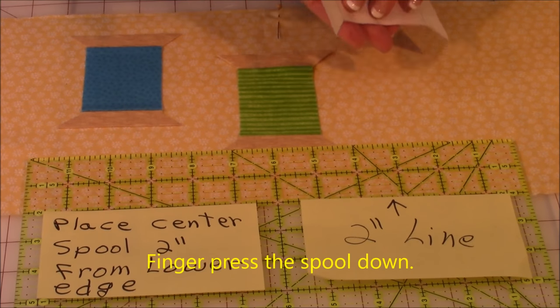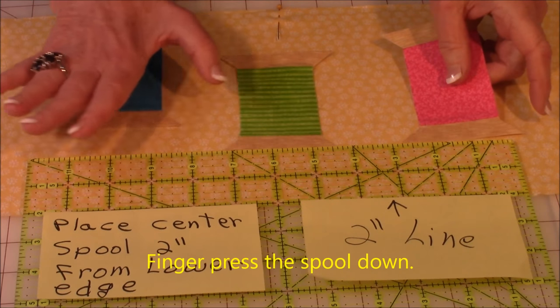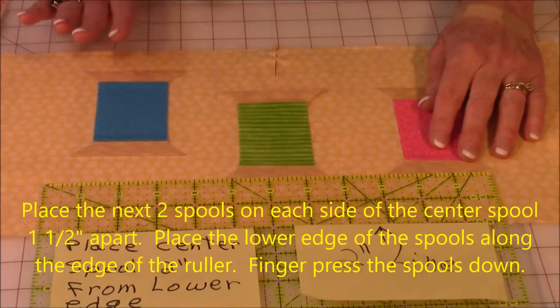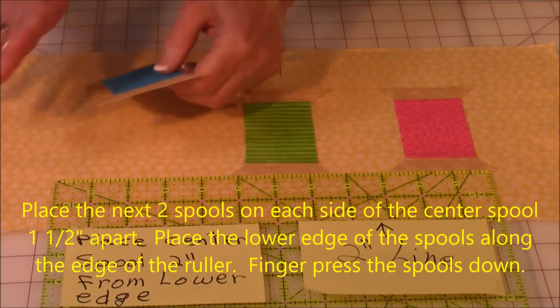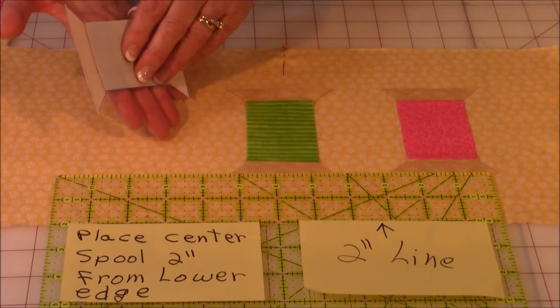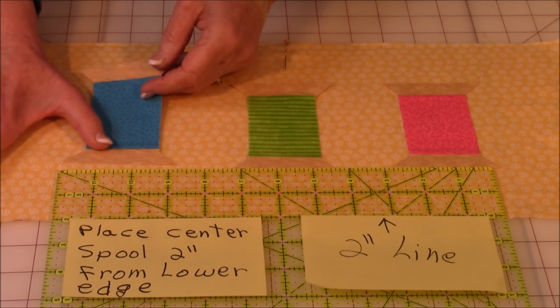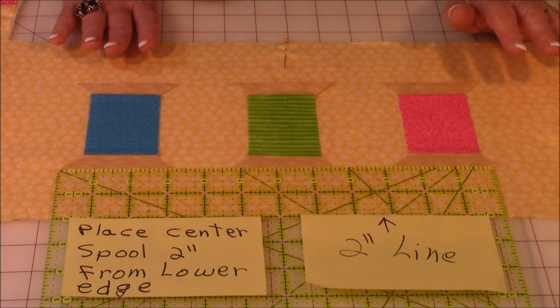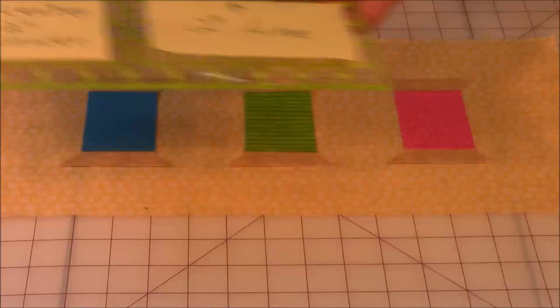Take your next spool. Remove the paper backing. And line it up about one and a half inches over from the center spool. And do the same thing with the last spool. Remove the paper backing. Line it up about an inch and a half. Finger press everything down. Now it's not permanently fused on yet.